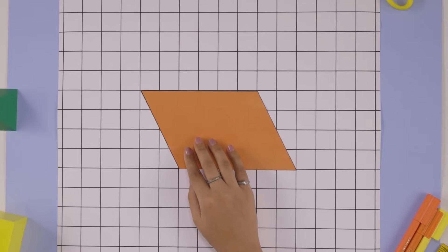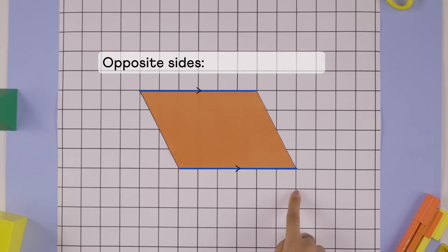Here's a parallelogram. How can we find its area? Before that, let's quickly understand this shape. Its opposite sides are parallel. Its opposite sides are equal as well. We'll use these properties to find its area.